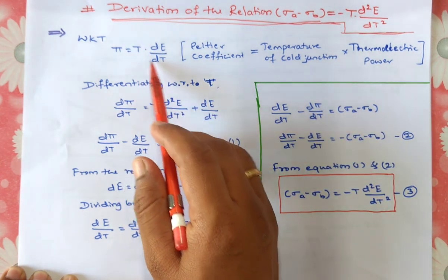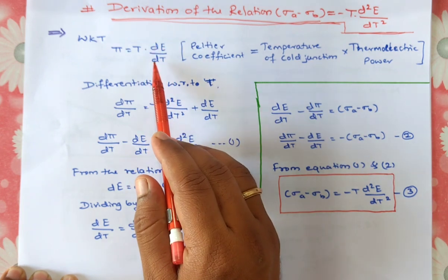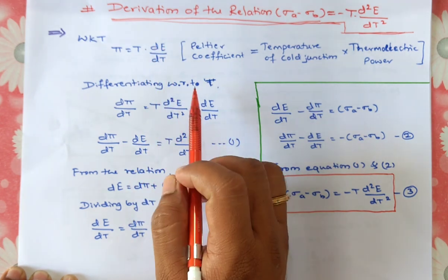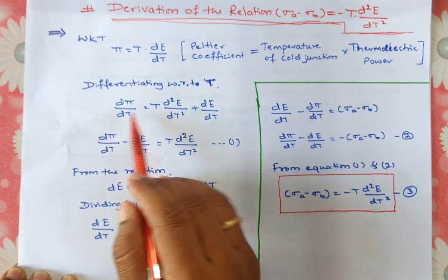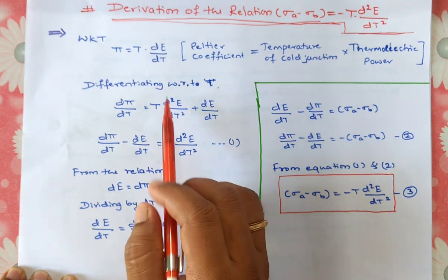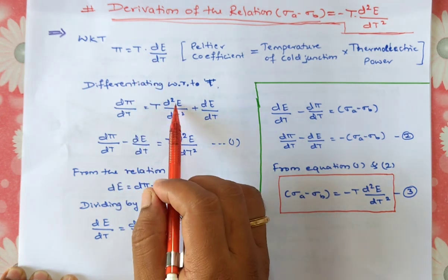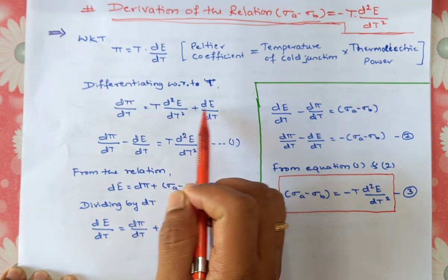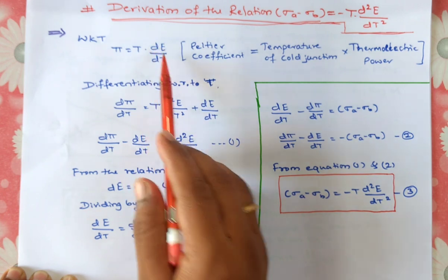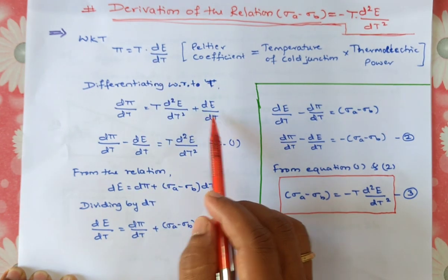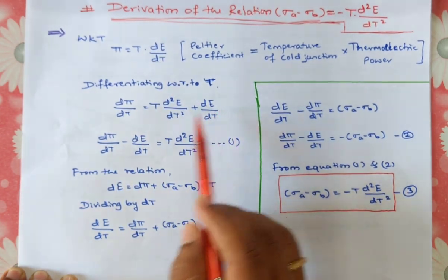Now I am going to differentiate this relation with respect to t, that is temperature. d pi divided by dt is equal to t as a constant times d square e divided by dt square, then plus d e divided by dt, where differentiation of the t term becomes 1.